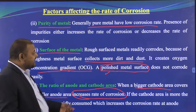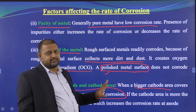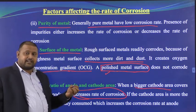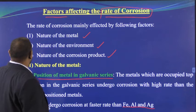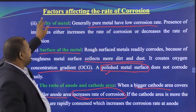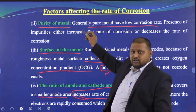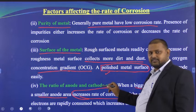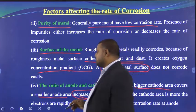Electrons are consumed at the cathode and corrosion rate increases when cathode area is large. To reduce corrosion, you need a small cathode area and large anode area — then corrosion rate is slow. In summary, under nature of the metal: position in galvanic series, purity, surface finish, and the anode-to-cathode area ratio all affect corrosion rate.